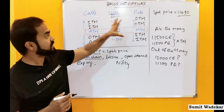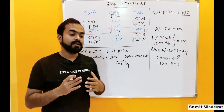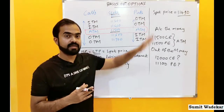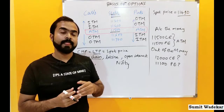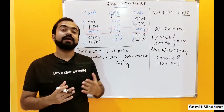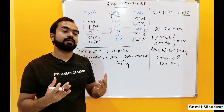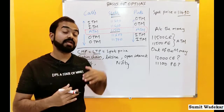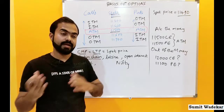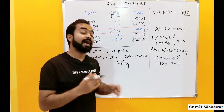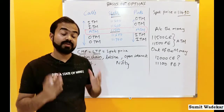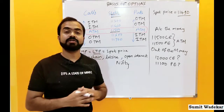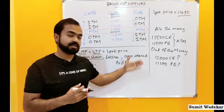In the option chain we have various strike prices, the call side on the left and the put side on the right. One important column is open interest, which shows the pending orders for the day — orders that have been initiated but not yet closed. Open interest analysis is very important in designing hedging strategies, and we will discuss this in the next videos.